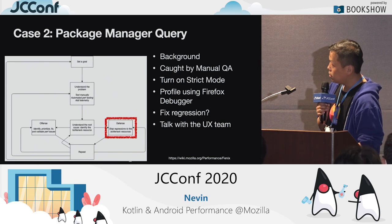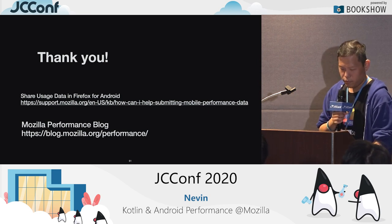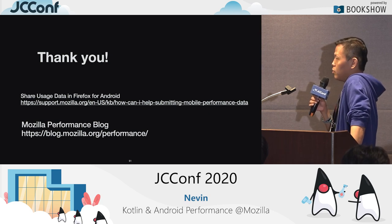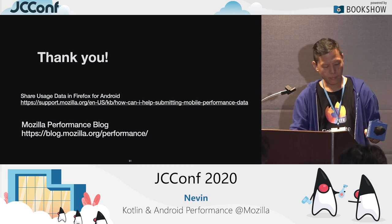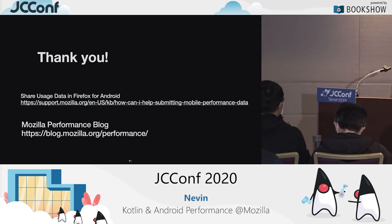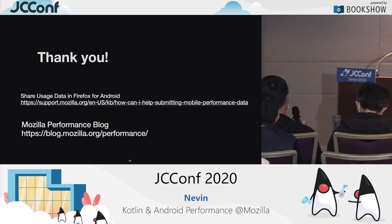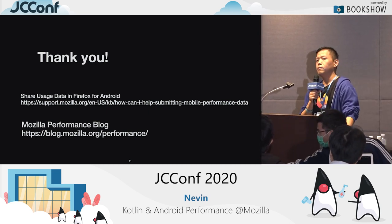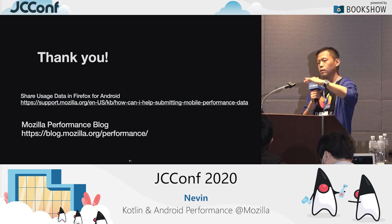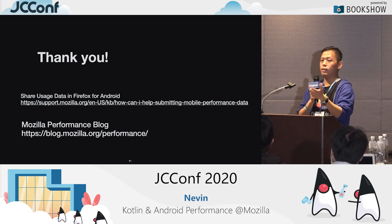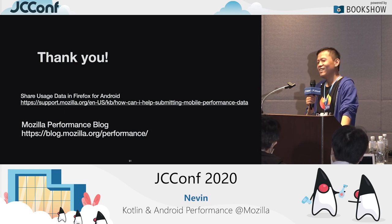That's pretty much my talk. If you want to help us, you can share user data in Firefox for Android if you have the app installed, or you can read the multi-app performance blog, which covers mobile and desktop performance. Thank you. For a Q&A question about handling performance under deadline pressure: we have a triage process. The performance team and product team list issues on a GitHub page with labels like 'needs triage.' Normally we won't change the architecture before a release — it's never a good idea — but you have to prioritize.